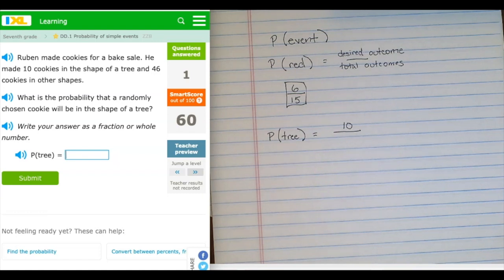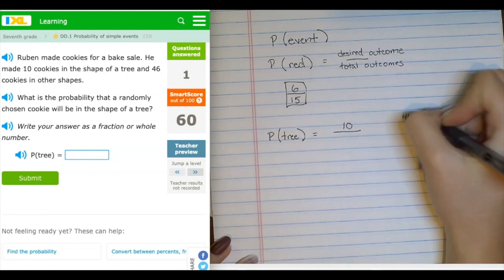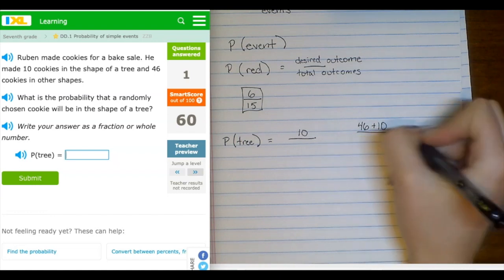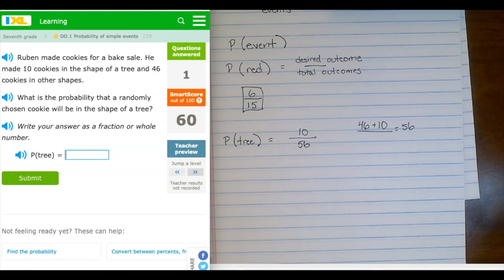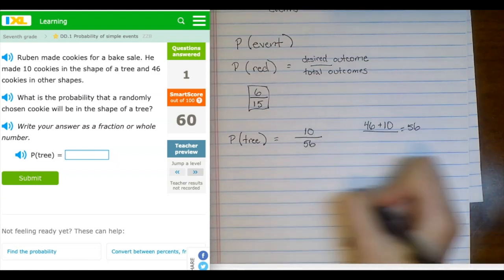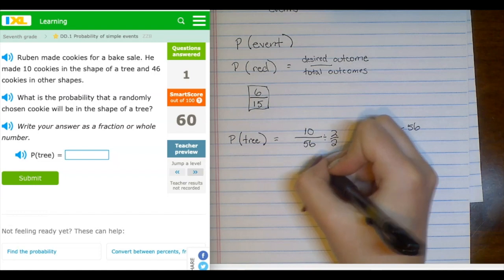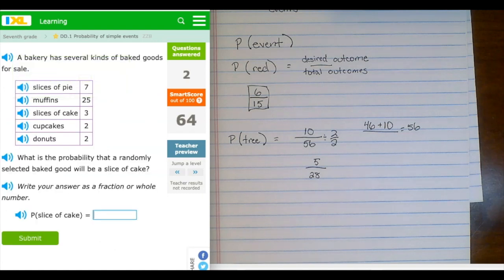So the tricky part about this problem is that 46 has to get contributed to the total with the 10 that are trees. So we have 46 that are not trees, 10 that are trees, which means that we have 56 total. So my fraction is going to look like 10 over 56. Usually that will be fine, but this is a reducible fraction, so we could divide it in half. So if we divided both of these by 2 to reduce this fraction, I would get 5 over 28.